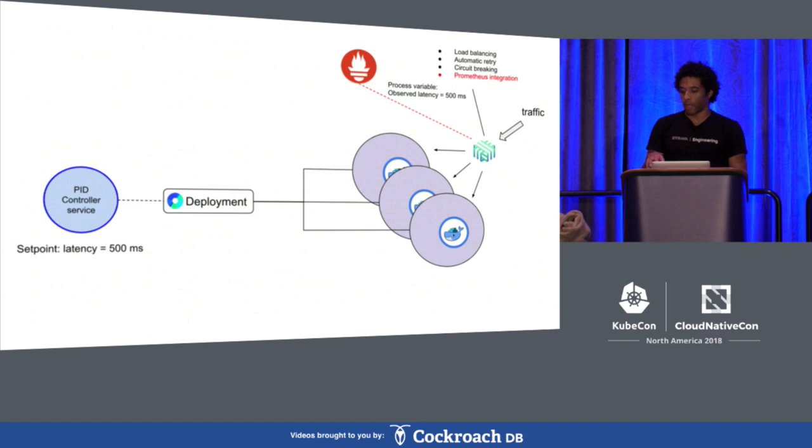But I want to focus on the Prometheus integration. So Linkerd can automatically export Prometheus-style metrics based on the services it's proxying. And we use that along with some application-level metrics to get a good sense of what our topologies are doing in production. So that gives us everything we need to have a feedback loop for our PID controller.